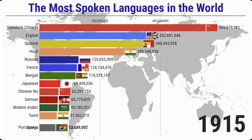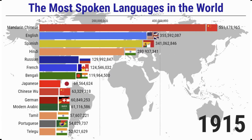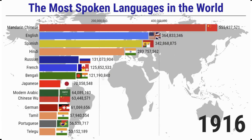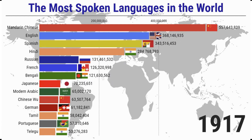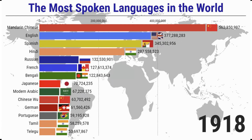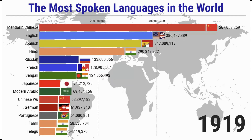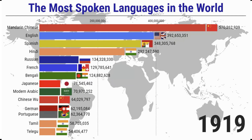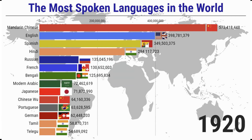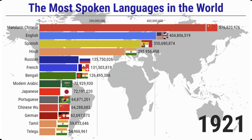Spanish is listed as the official language by 23 countries and regions, ranking fourth. Russian is listed as the official language by 10 countries and regions, ranking fifth. There are only two countries that use Chinese as their official language and three other regions.